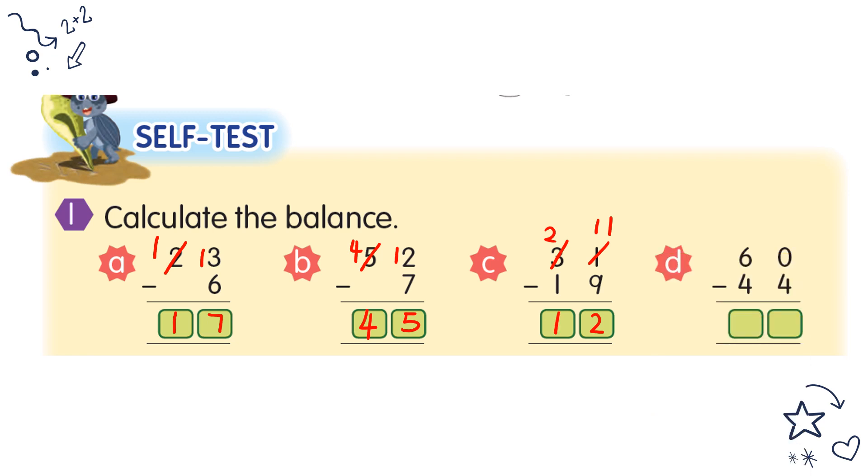For D, 60 minus 44. 0 minus 4 cannot, so you borrow from here. Becomes 5 and this becomes 10. 10 minus 4 equals 6. 5 minus 1, and 5 minus 4 equals 1. So your answer is 16.